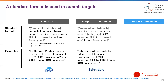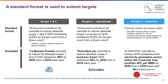You can see the standard language in the first row and an example in the second row. For Scope 3 operational, which is optional, companies set a target similar to Scope 1 and 2. For Scope 3 finance, the format varies by asset class. Please refer back to Module 5 and 6 for examples, or Section 6 of the guidance for the specifics.